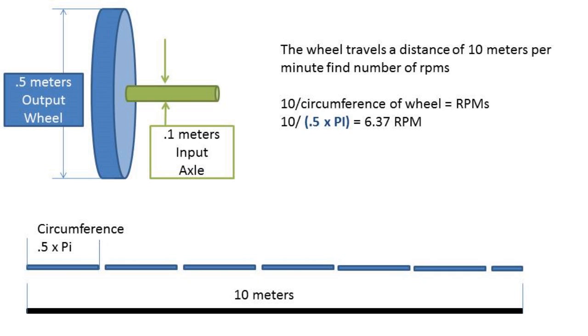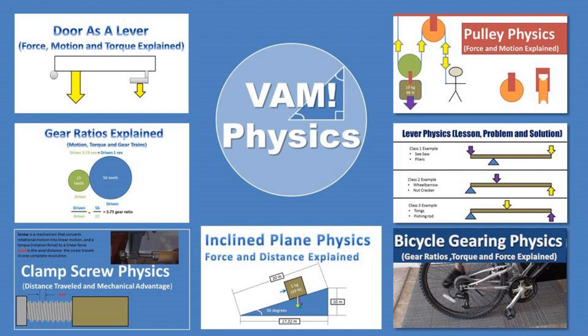The way you can think about this is that every time the wheel rotates, it completes one circumference. So if we lay out 6.37 circumferences, this would be the amount needed to take up 10 meters of travel. So the wheel must rotate around 6.37 times per minute to make up 10 meters per minute of travel.